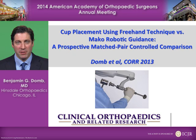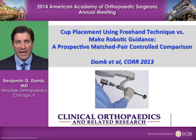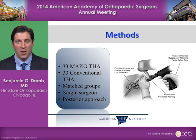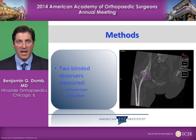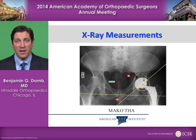We recently published a study in Clinical Orthopaedics and Related Research assessing cup placement using a freehand technique versus robotic guidance. This was a prospective matched pair controlled comparison with 33 patients in each group, a single surgeon using a posterior approach, and two blinded observers who measured the anteversion and inclination. X-ray measurements were all performed digitally.